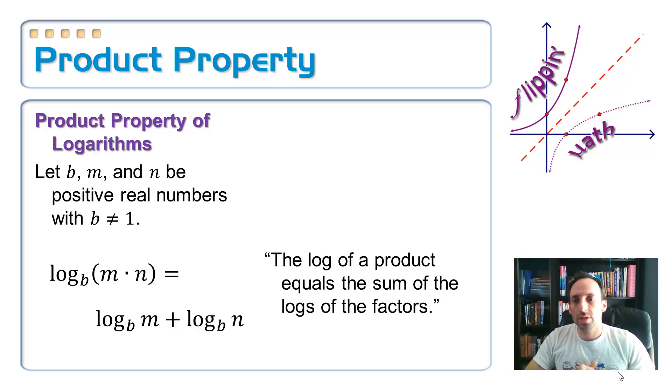Now, here's the first property over here on the left-hand side. The log base B of the product of M times N can be simplified as the log base B of M plus the log base B of N. What this is saying is that the log of a product simplifies or is the same thing as the sum of the logs of the factors.